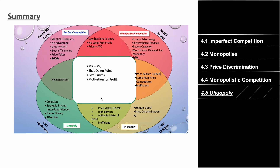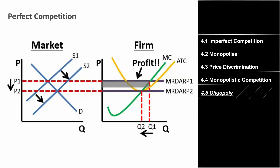Now let's review all the graphs. For perfect competition, the market is supply and demand; the firm has MC, ATC, and a constant demand equal to marginal revenue line. ATC glides over the MR equals demand curve for normal profit, and MC is swoosh-shaped. For monopolistic competition, MR equals demand in structure but ATC glides over in the long run; in the short run ATC is below the demand curve.